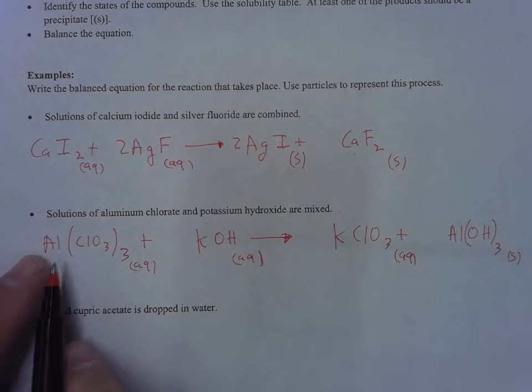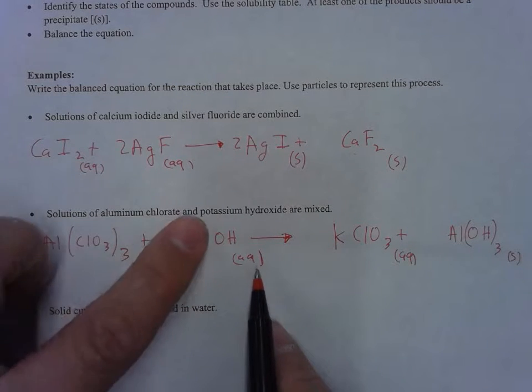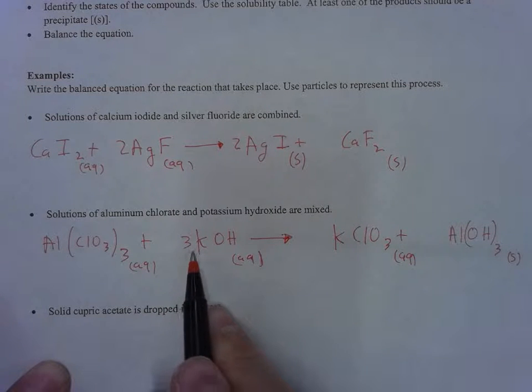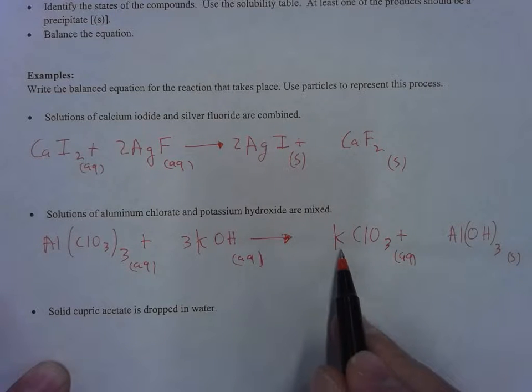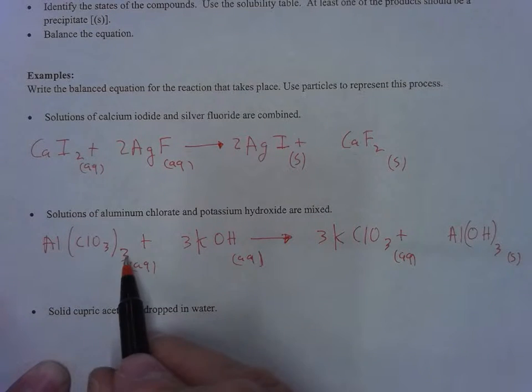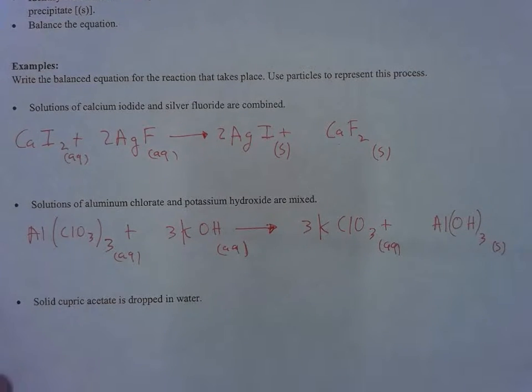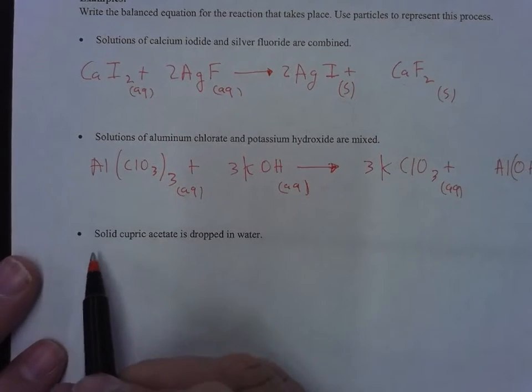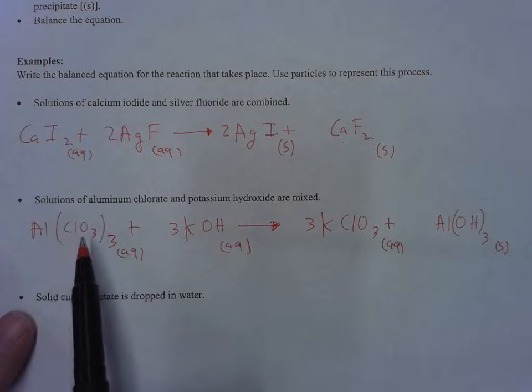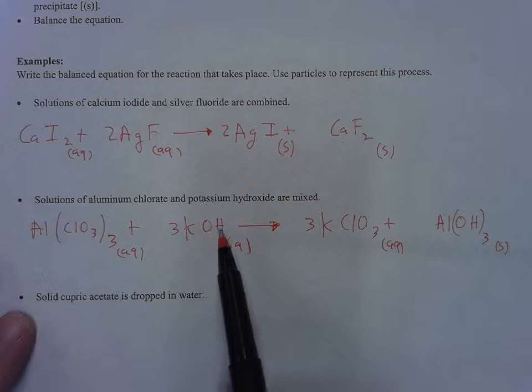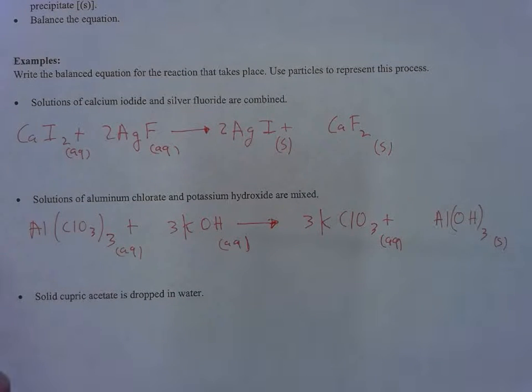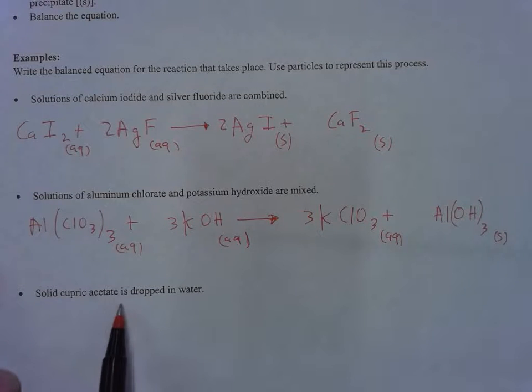My last step is to balance. I've got one aluminum here and one there. One hydroxide here and three there, so I put a 3 in front. That gives me three potassiums, and I put a 3 in front—now I've got three potassiums, three chlorates and three chlorates, so I am balanced. By the way, you can treat these polyatomic ions like chlorate and hydroxide as one unit when you do your chart—that way it's a lot easier and faster to balance.